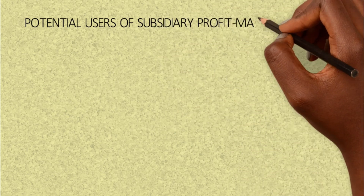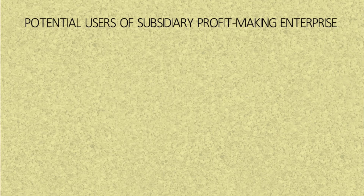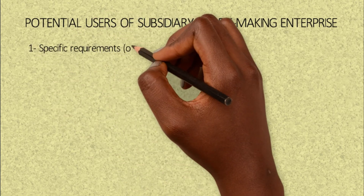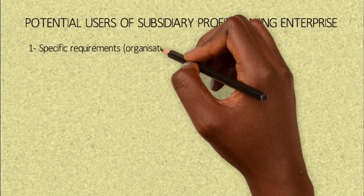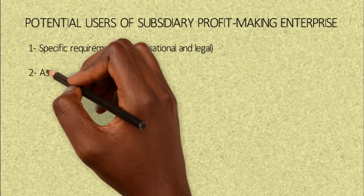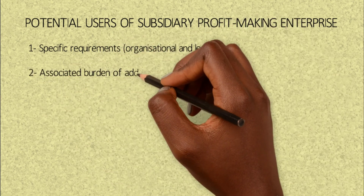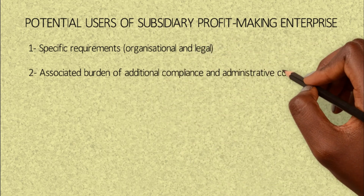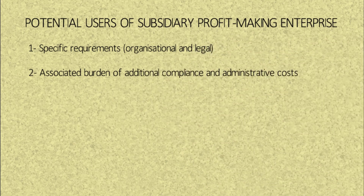Some civil society organizations that can use this model involve organizations that respect specific requirements — organizational and legal requirements. Once you meet them, you can be able to apply this model to the work of your organization.